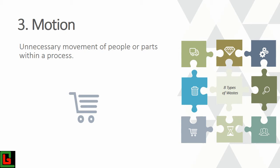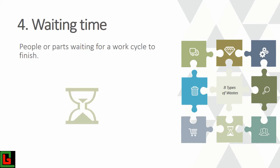Removing motion waste reduces processing time and makes the operator's life easier and less stressful. One way to eliminate motion waste is by applying 5S — a Japanese approach to keep things tidy and within the operator's approachable range. Unnecessary motion may look small at first but it adds up.